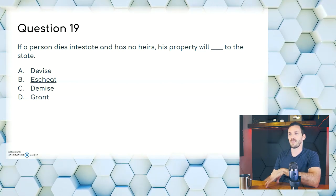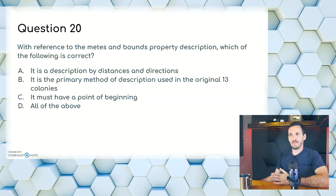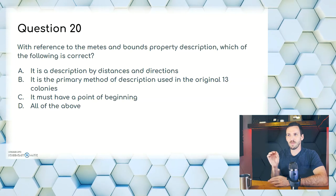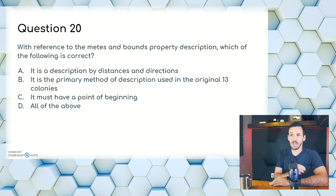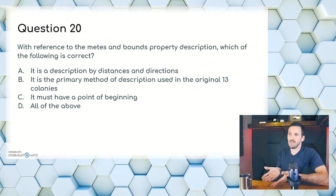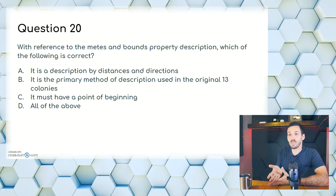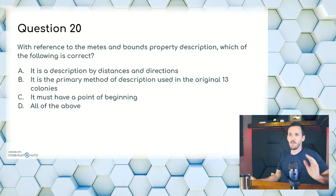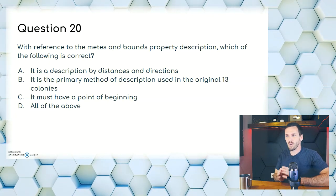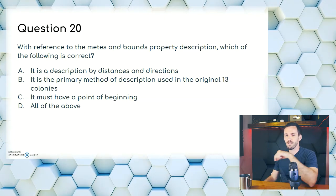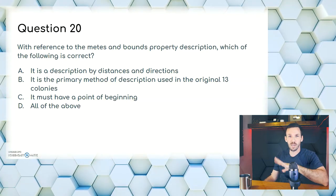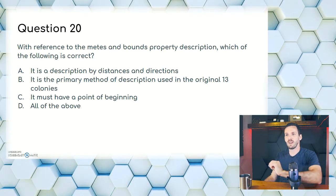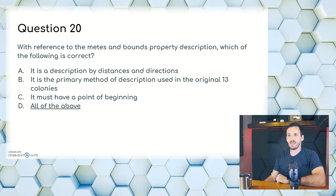Question twenty: with reference to the metes and bounds property description, which of the following is correct? A, it is a description by distances and directions; B, it is the primary method of description used in the original 13 colonies; C, it must have a point of beginning; or D, all of the above. Metes and bounds is the old way of describing property — next to that rock, 10 feet from that cliff, one foot from the bear-shaped tree. The government rectangular system is more of a western thing. Answer is D, all of the above.